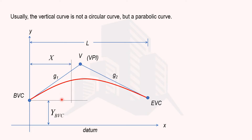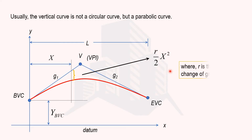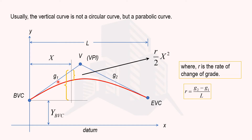Let's say we are at some horizontal distance x from BVC and we want a generalized equation to calculate the reduced level at that point. The distance from datum to BVC is y_BVC. We also need to know the vertical offset from the tangent to the curve. The distance from the point on the gradient to the curve is calculated using rate of change of grade r, where r equals (G2 minus G1) divided by L — the length of the vertical curve. The vertical distance along the tangent is G1·x.